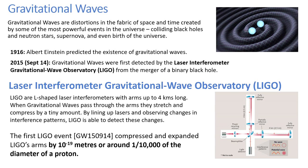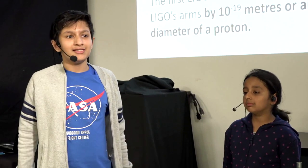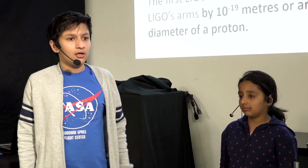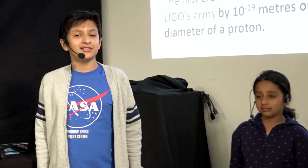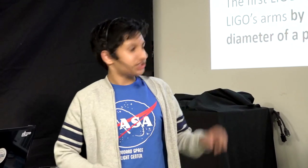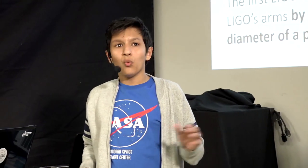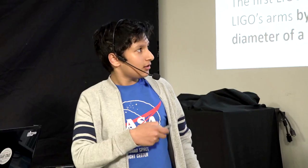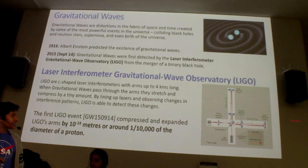How can we measure these gravitational waves from Earth? For this, we use the LIGO — the Light Interferometer Gravitational Observatory. It has an L-shaped structure. When a gravitational wave hits the Earth, one arm of the L will contract and the other arm will expand.